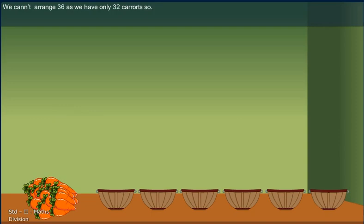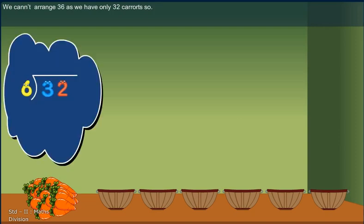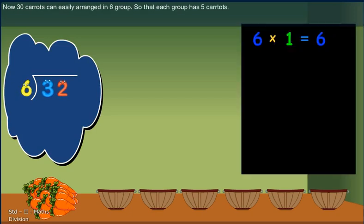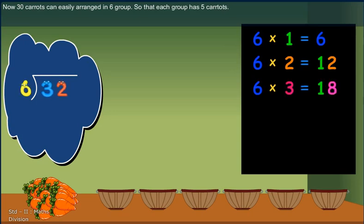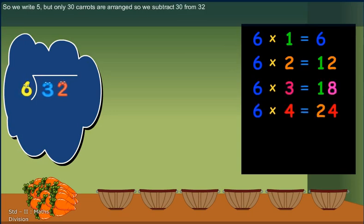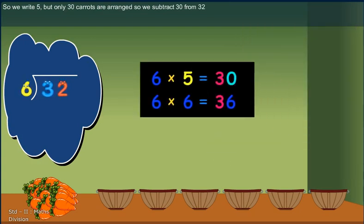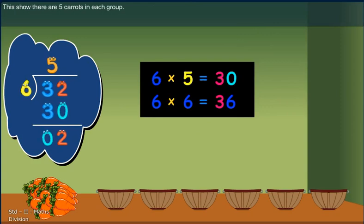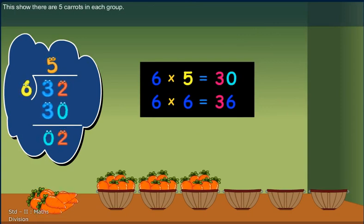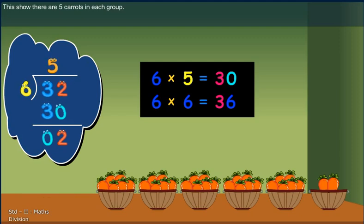We can't arrange 36 as we have only 32 carrots. So now, 30 carrots can easily arrange in 6 groups. So that each group has 5 carrots. So we write 5 but only 30 carrots are arranged. So we subtract 30 from 32. And remaining are 2 carrots. In this show, there are 5 carrots in each group. This show, 2 carrots remainder.